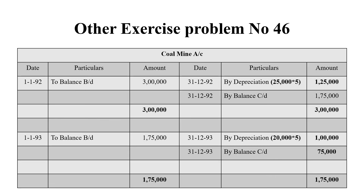On 1/1/1992, the balance brought down is Rs.3,00,000. Again, 25,000 tons of coal were mined. Depreciation is 25,000 × Rs.5 = Rs.1,25,000, and the balancing figure carried forward is Rs.1,75,000.